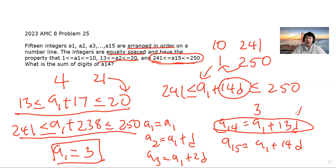If A1 is 3 and D is 17, now all we have to do is find A14, which is 3 plus 13 times 17. We can easily find 3 plus 13 times 17. That is equal to 224. And the sum of the digits of A14, 2 plus 2 plus 4, is equal to 8. And that is our answer to this problem.